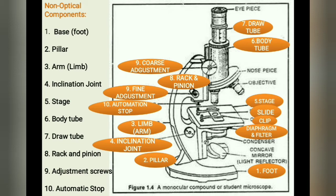The fifth part is the stage — a metallic platform with a central hole, fitted to the lower part of the arm. The microscopic slides are held on the stage by either simple side clips or by a mechanical stage clip. The sixth part is the body tube, meant for holding the ocular and objective lenses at its two ends. The end holding the ocular lens is called the head, while the end containing three to four objective lenses is called the nosepiece. The body tube has an internal pathway for the passing of light rays which form the enlarged image of microscopic objects.